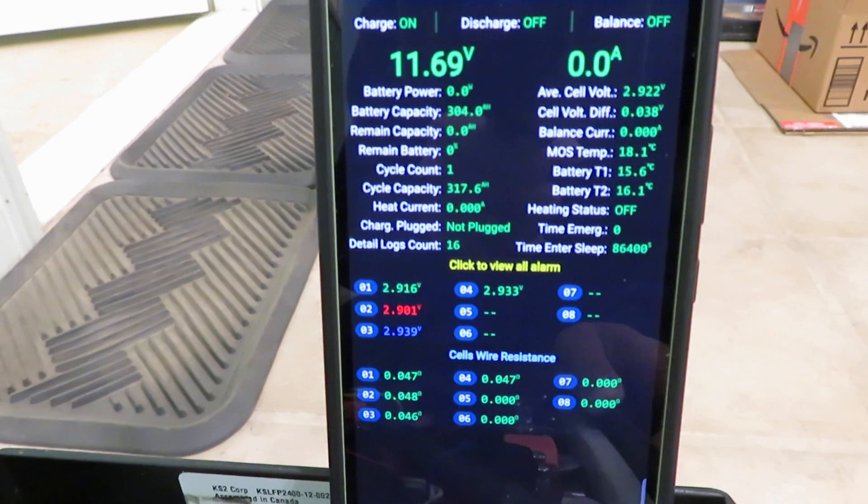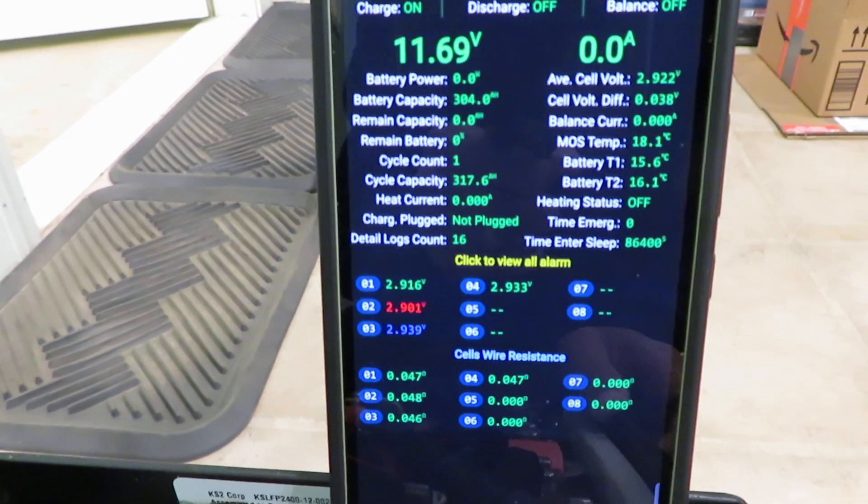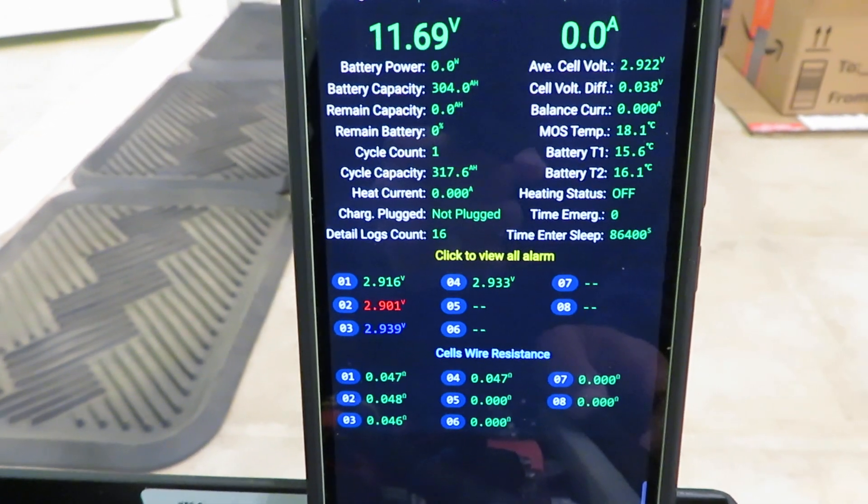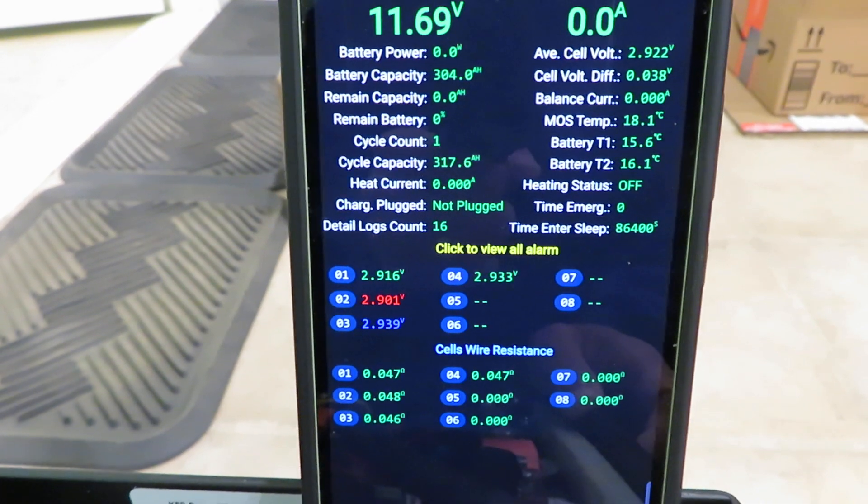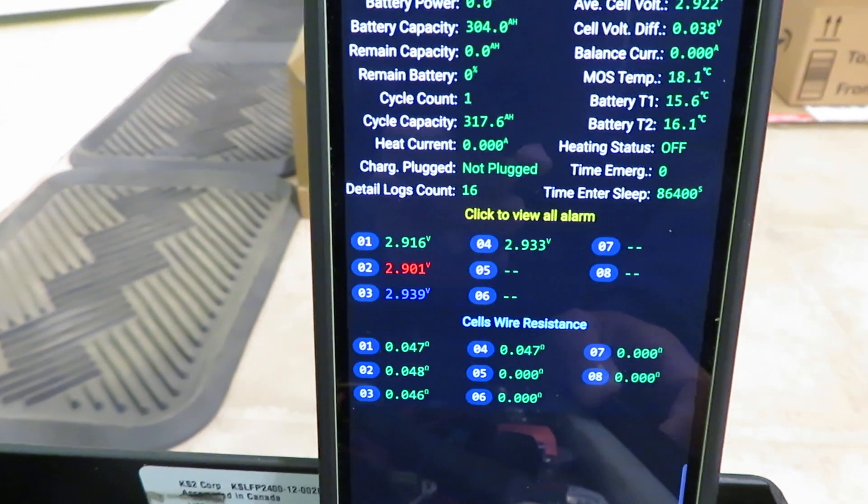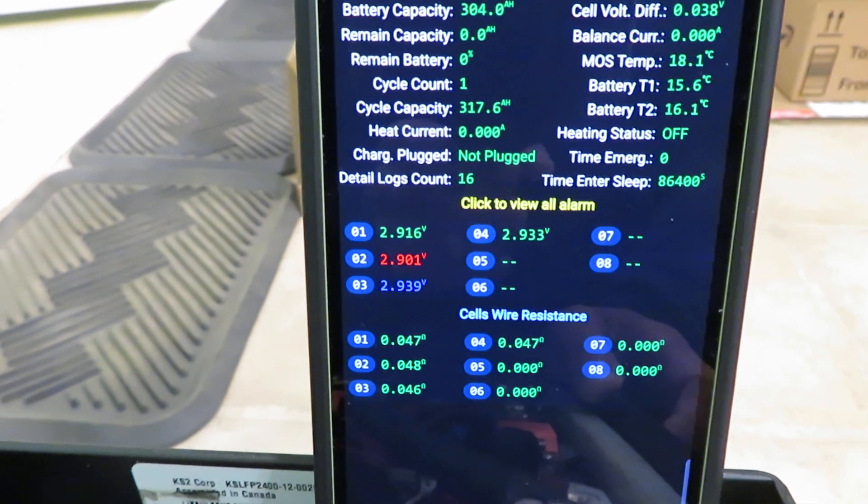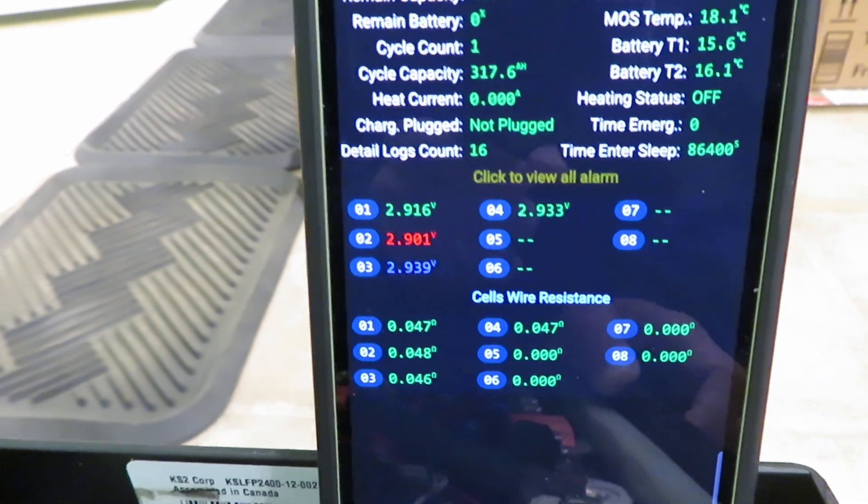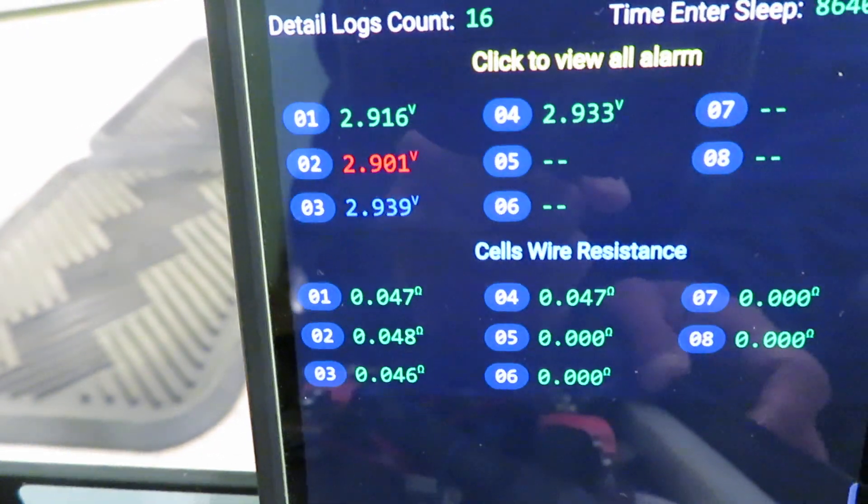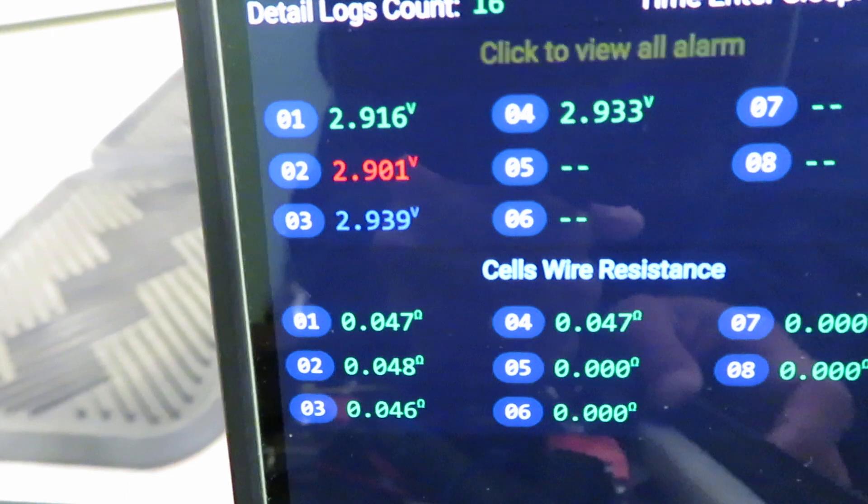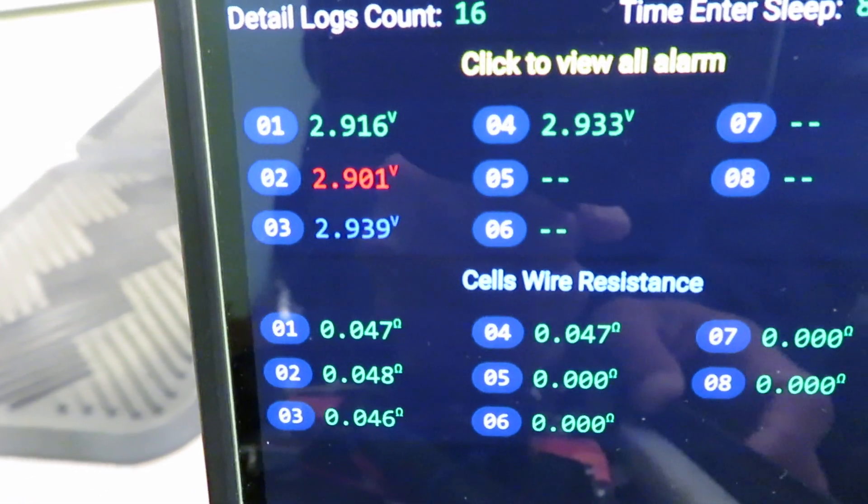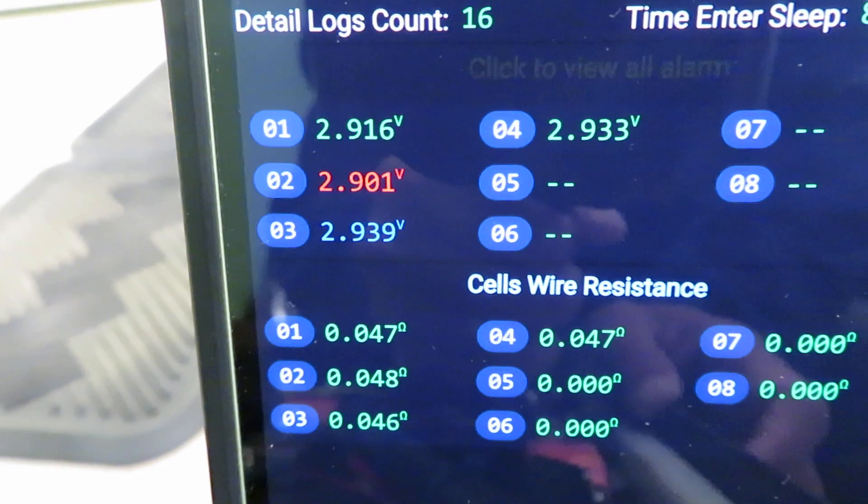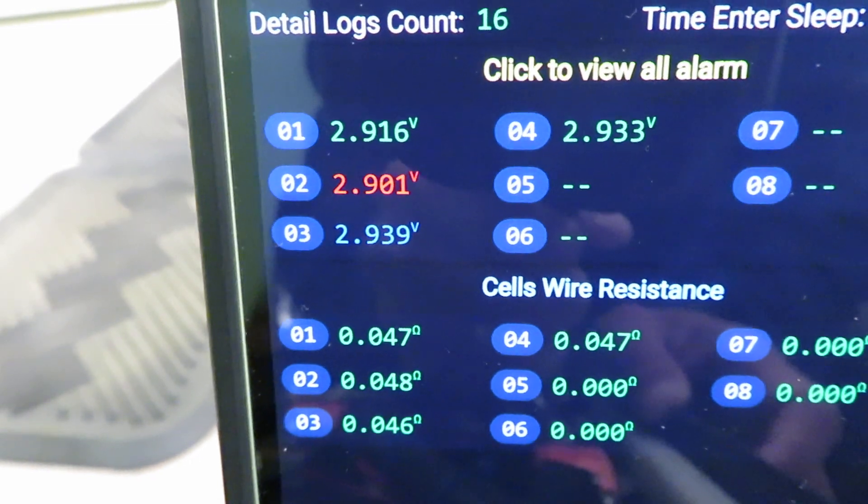The BMS controller was programmed to shut down at cell voltages lower than 2.85 volts. So it shut down a few hours earlier and now the cell voltages recovered back to about 2.9 volts.